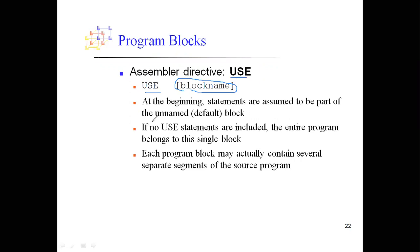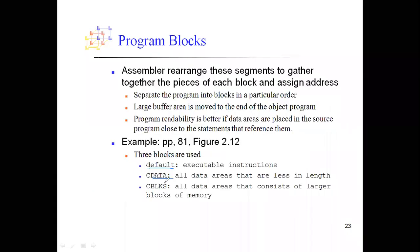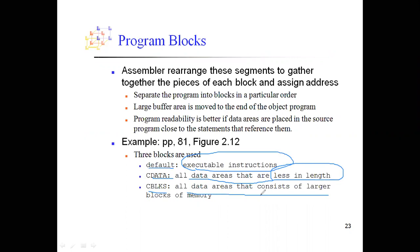There are three kinds of blocks: a default block, a data block (CDATA), and a CBLKS block. All executable instructions that usually come in the beginning are placed in the default block. If there is no USE statement, the entire program is considered a single block. The CDATA block contains data areas that are smaller in length, for example RESW 1. The CBLKS block contains data areas of larger memory, for example RESB 4096.